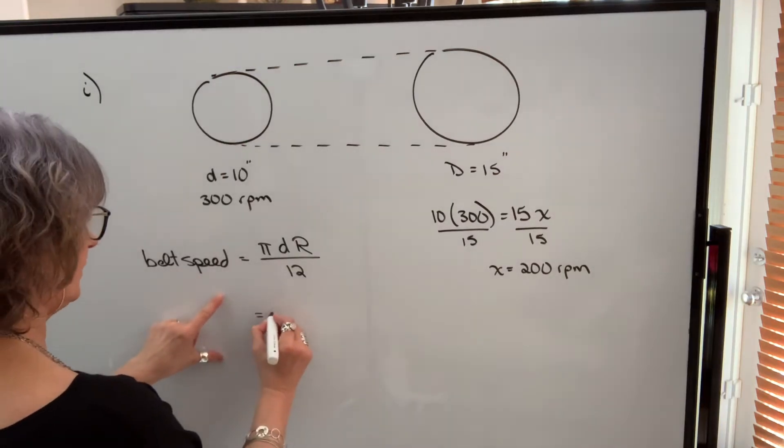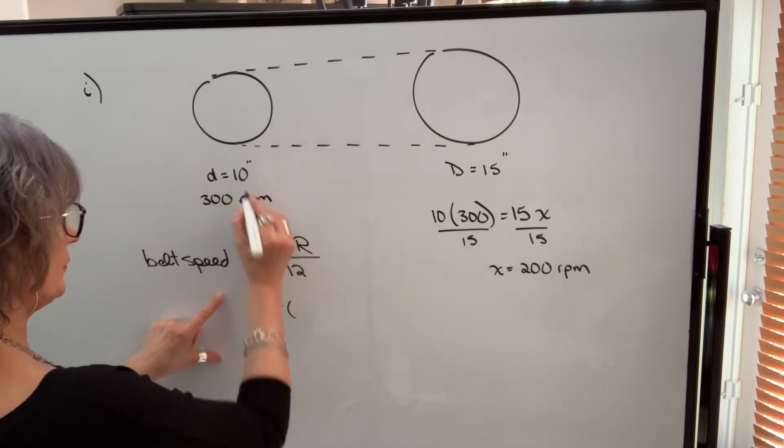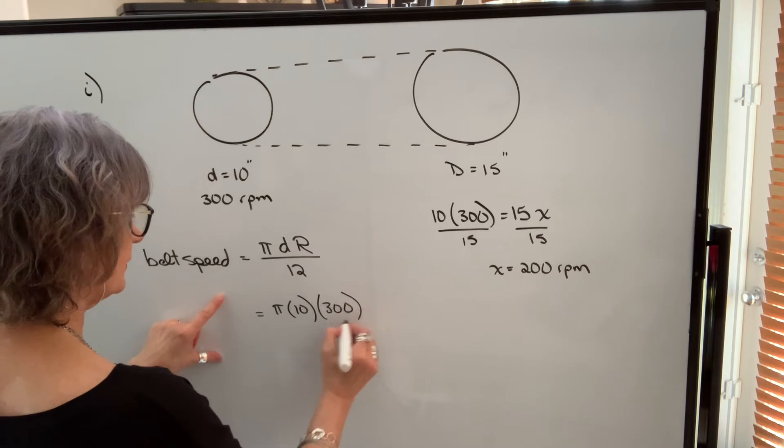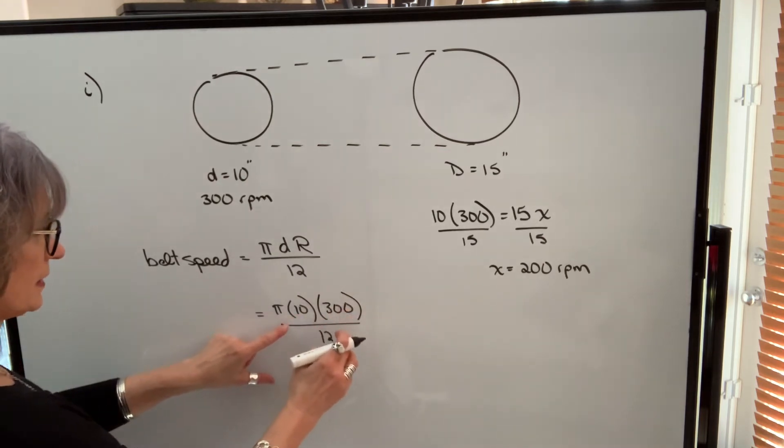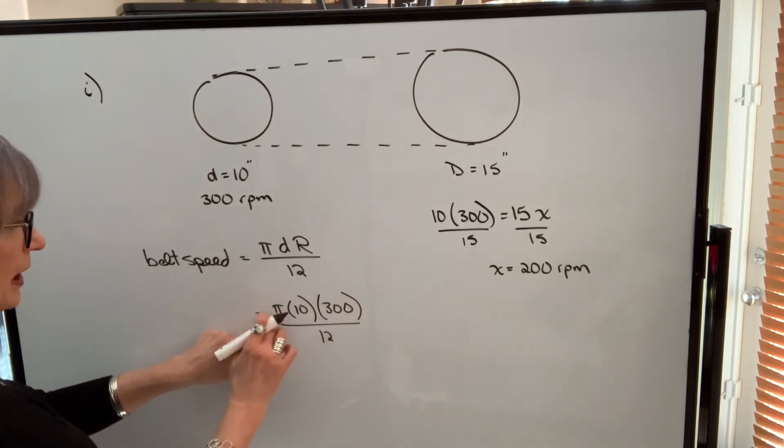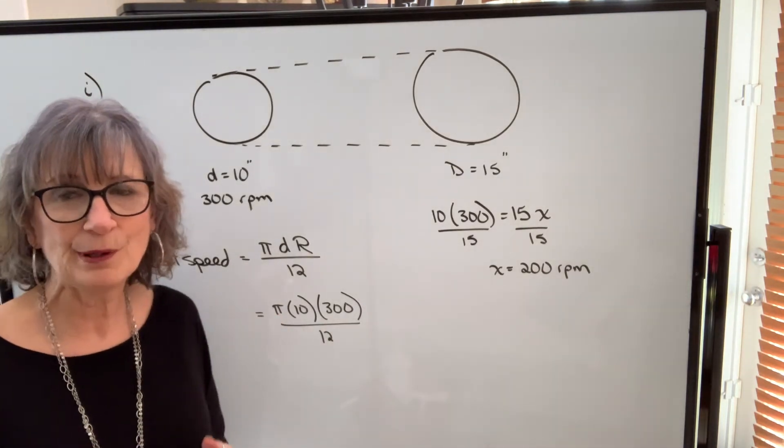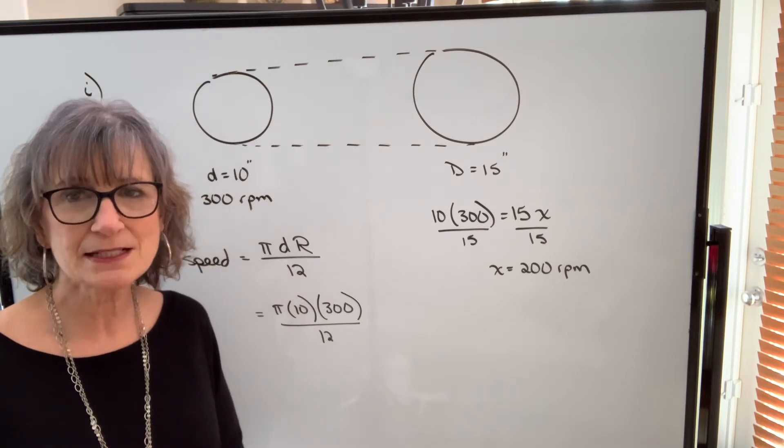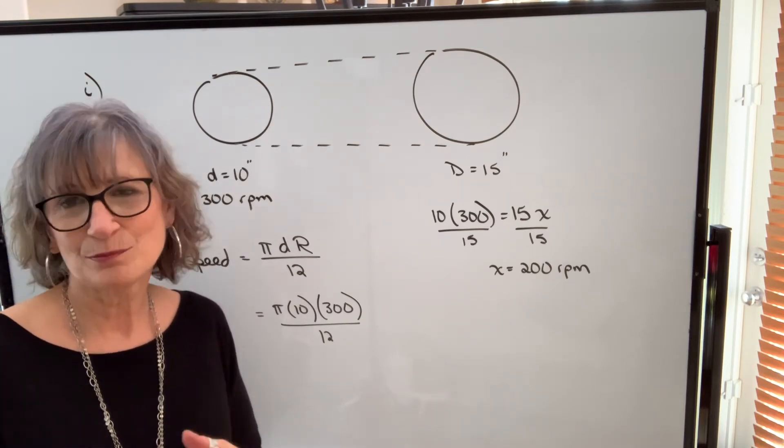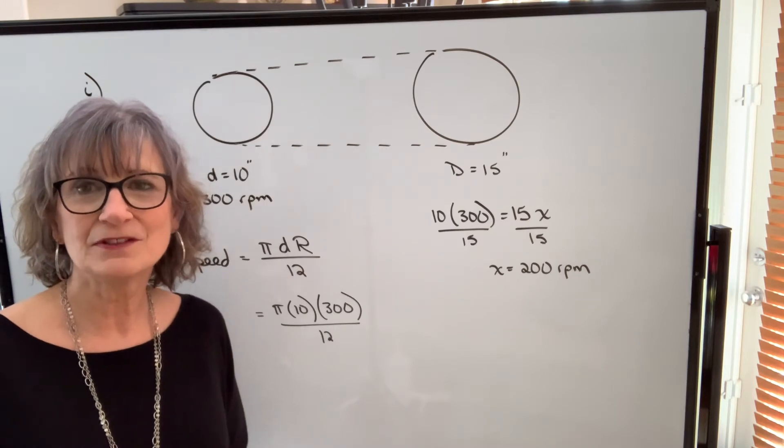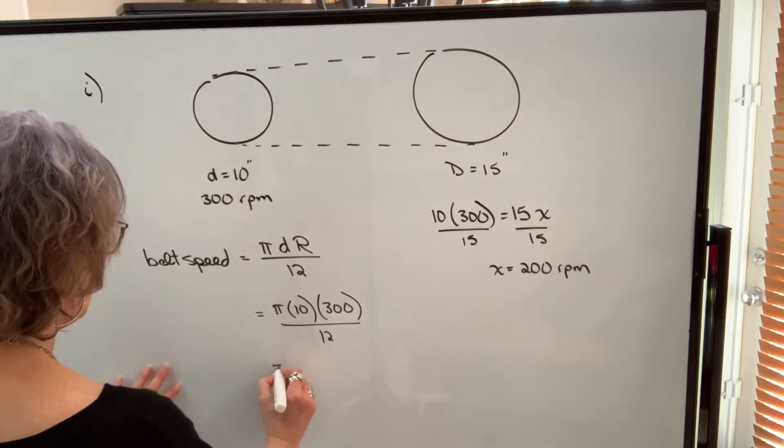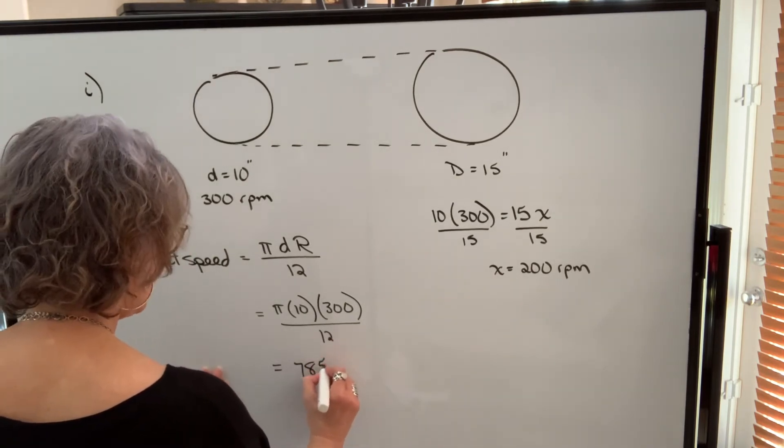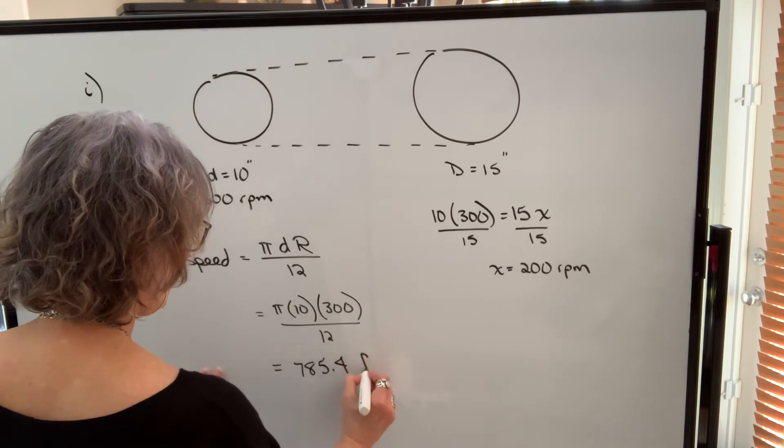Plug it into my belt speed formula. Diameter is 10, RPM is 300, and then I divide by 12. So I punch all of this into my calculator. I use the pi button on my calculator. If you don't have a pi button, you could use 3.14 or you could use 3.1416. Your answers will vary slightly, but it's probably not going to make a big enough difference to worry about. When I punch this into my calculator, I get a value of 785.4 and that will be feet per minute.